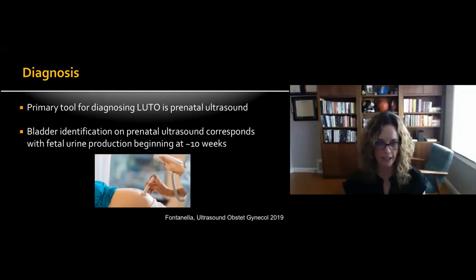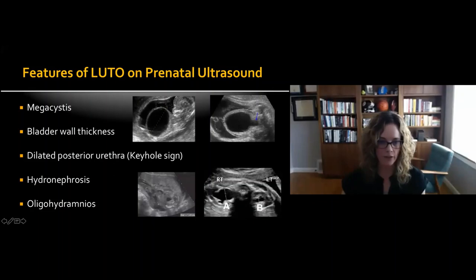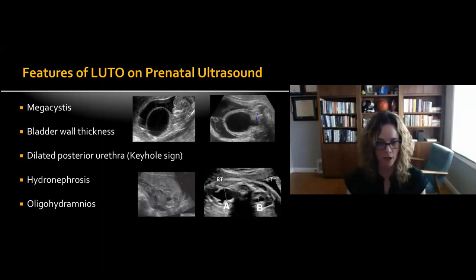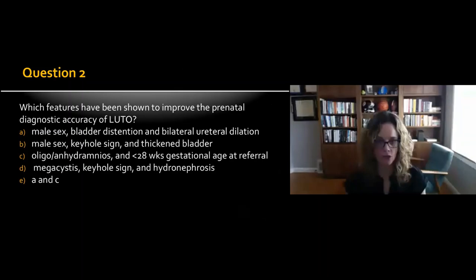The primary tool for diagnosing LUTO is prenatal ultrasound. Bladder identification corresponds with fetal urine production starting around 10 weeks. Features of LUTO on prenatal ultrasound include megacystis — a large bladder — increased bladder wall thickness, the dilated posterior urethra or keyhole sign, bilateral hydronephrosis, and oligo- or anhydramnios measured via amniotic fluid index or deepest vertical pocket. The triad of megacystis, dilated posterior urethra, and hydronephrosis has typically been used as diagnostic indicators for LUTO.